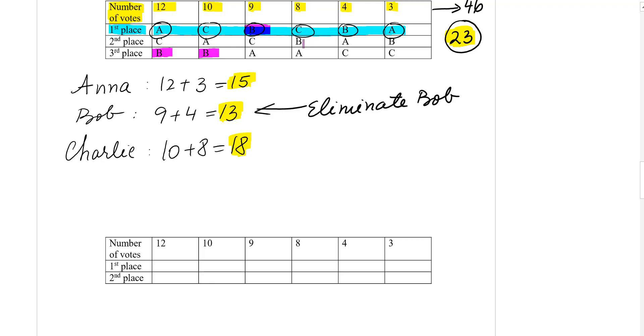This is going to be eliminated. So then our new table is going to have AC, CA, CA. You see how here since we eliminated B, C came on the first place.